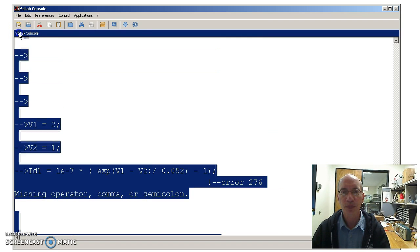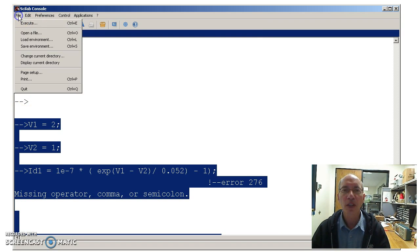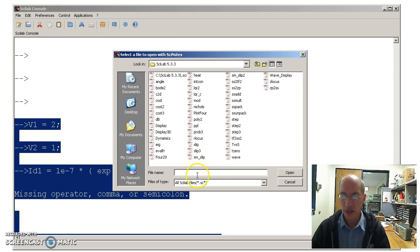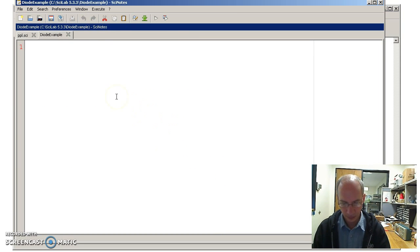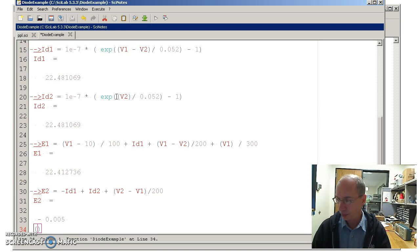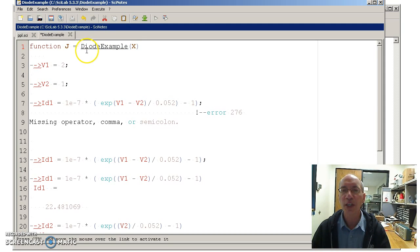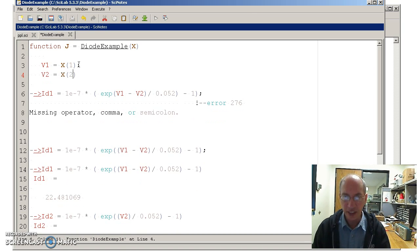Once I get those in there, I can copy those into a function. So let's do a copy. Let's call it diode example. In Scilab, I have the keyword function. This name here says I've got a subroutine called diode example. I'm going to pass to an X. X is going to be a two-by-one array. The first entry I'll interpret as V1. The second entry, that's my guess, would be V2.